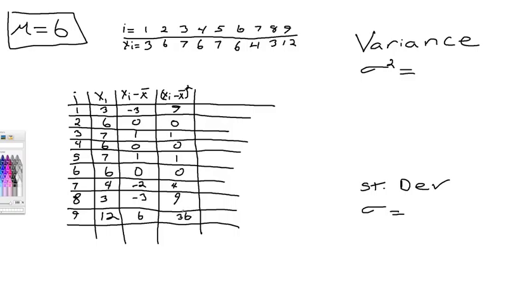Again, I always double-check this because this is where I mess up most often. Square it. Negative 3 is 9. 0, 0, 1, 0, 1, 0, 1, 0, 4, 9, and 36.